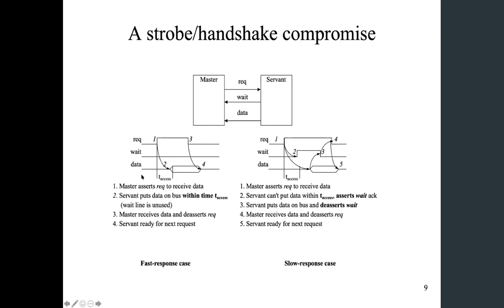In this case, the wait line is unused because the servant is working as expected and is able to put valid data on the data bus within the t-access time. But in some other situations, maybe the servant has to wait for other events or some internal faults cause delays. After the t-access time, it does not produce valid data. If we followed the first protocol here, the master would try to read data that is invalid, which is not safe.